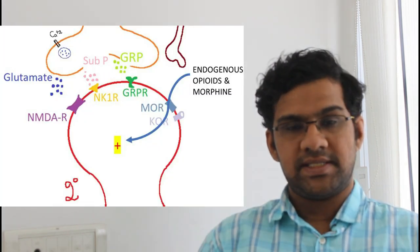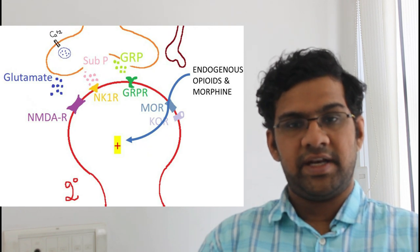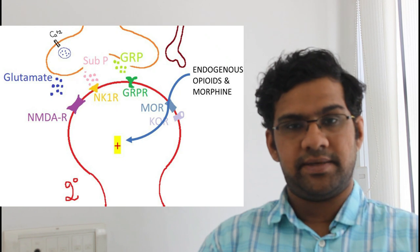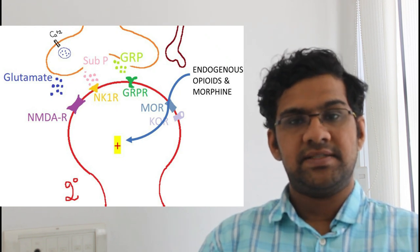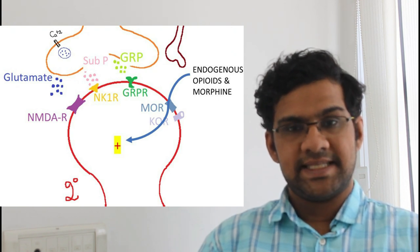Now let's see the transmitters of itch pathway at the spinal level. Let's first discuss the ones which we can tackle with medications, followed by the ones which are very important in transmission of the itch. Morphine is one such agent that causes itch sensation when given as spinal anesthesia or epidural anesthesia. Endogenous opioids which are produced in conditions with liver and kidney diseases will also trigger the itch sensation in a similar way.